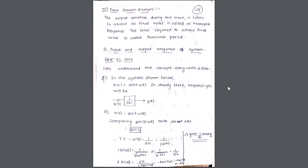If you see the question: in the system shown, x(t) = sin(t)·u(t). So x(t) is a sine signal and u(t) is a step function. In the steady state, the response y(t) will be — this is a standard question where you have input x(t), transfer function 1/(s+1), and output y(t). Comparing sin(t)·u(t) with sin(ωt)·u(t), we can say that ω = 1.